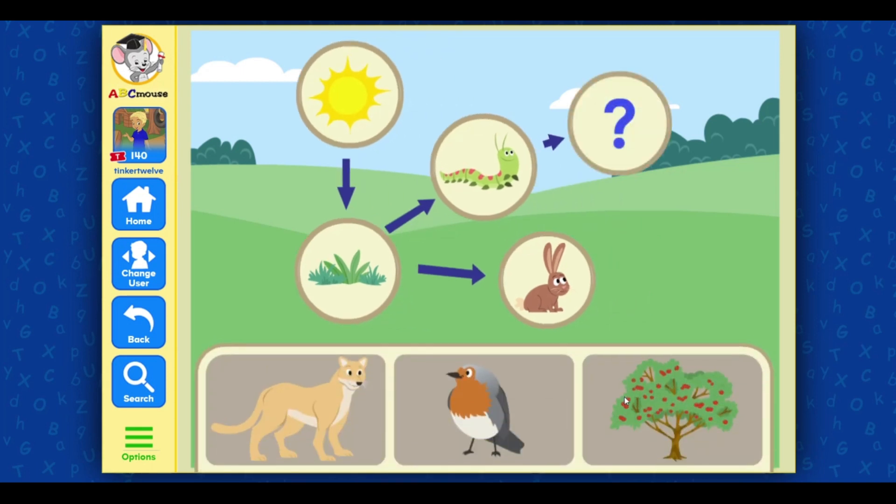This eats insects, worms, berries, and seeds. Fantastic! The robin does eat insects, worms, berries, and seeds.